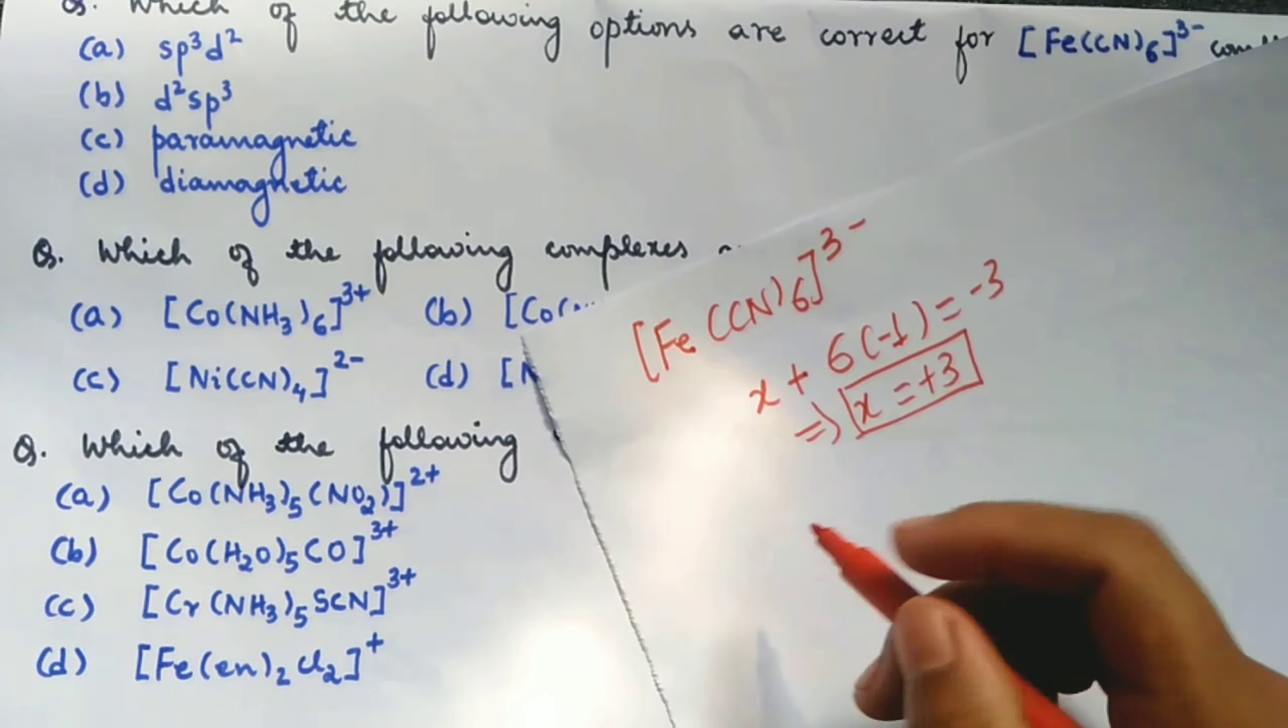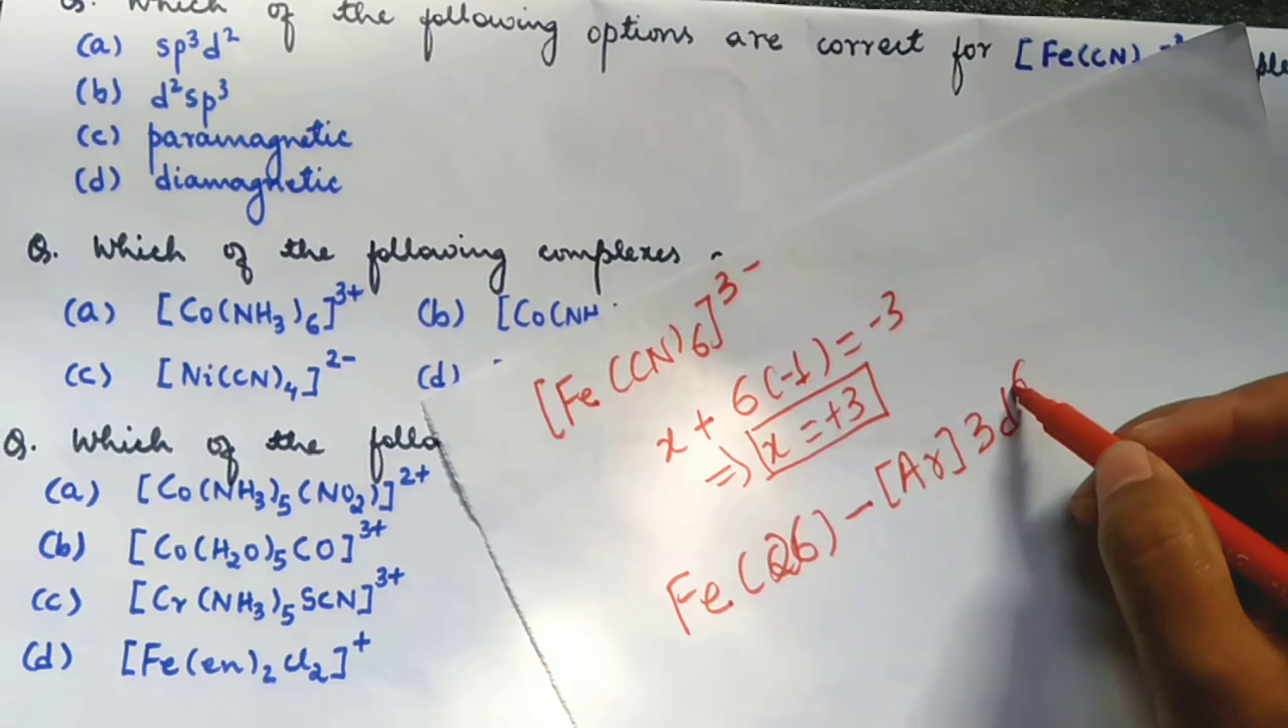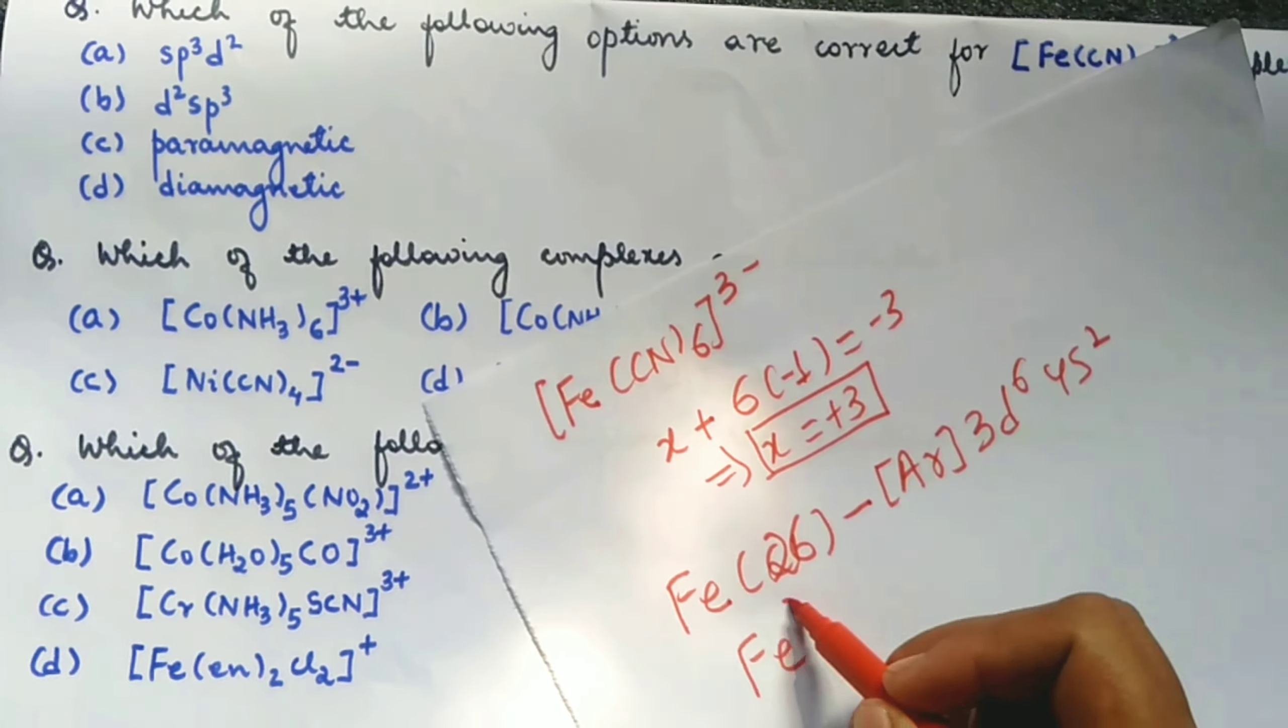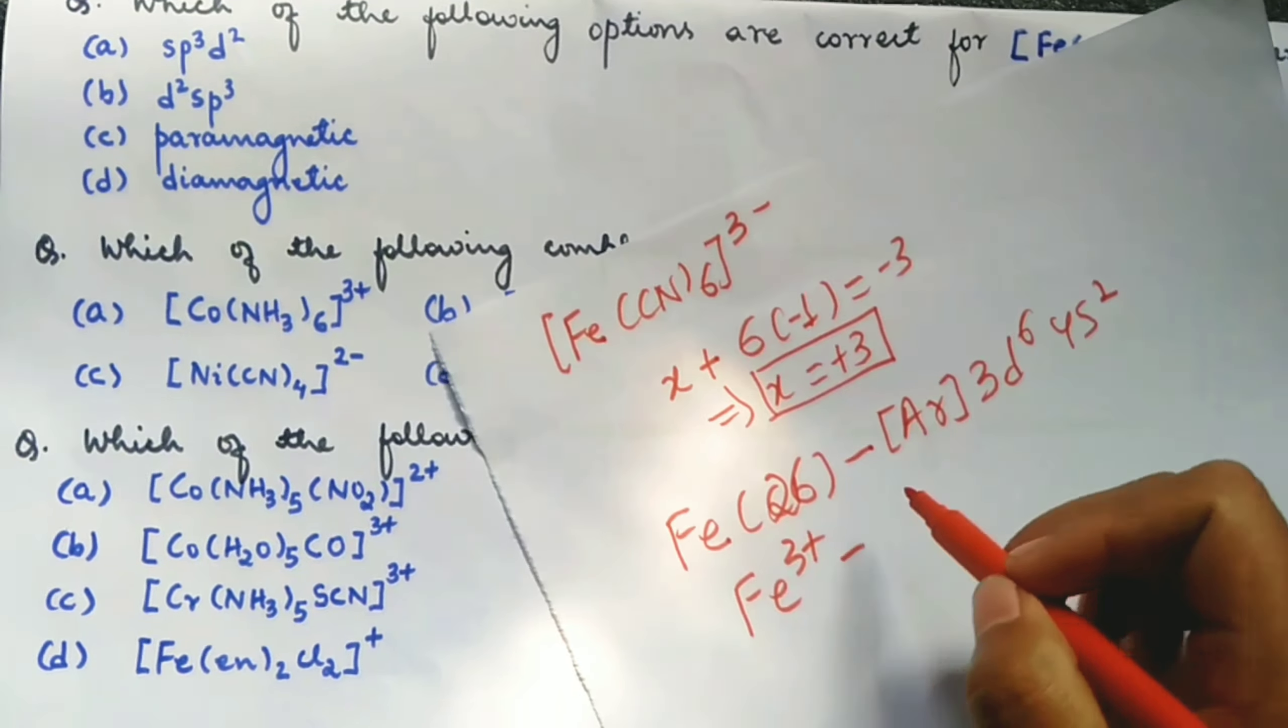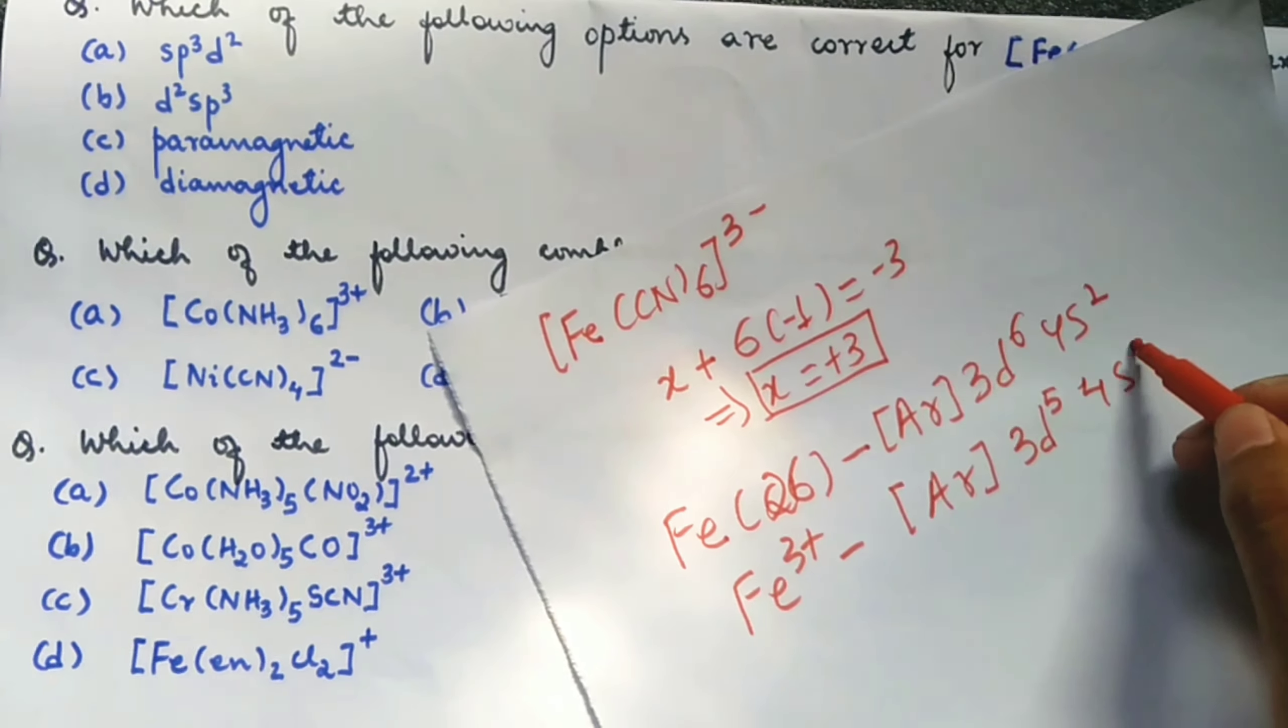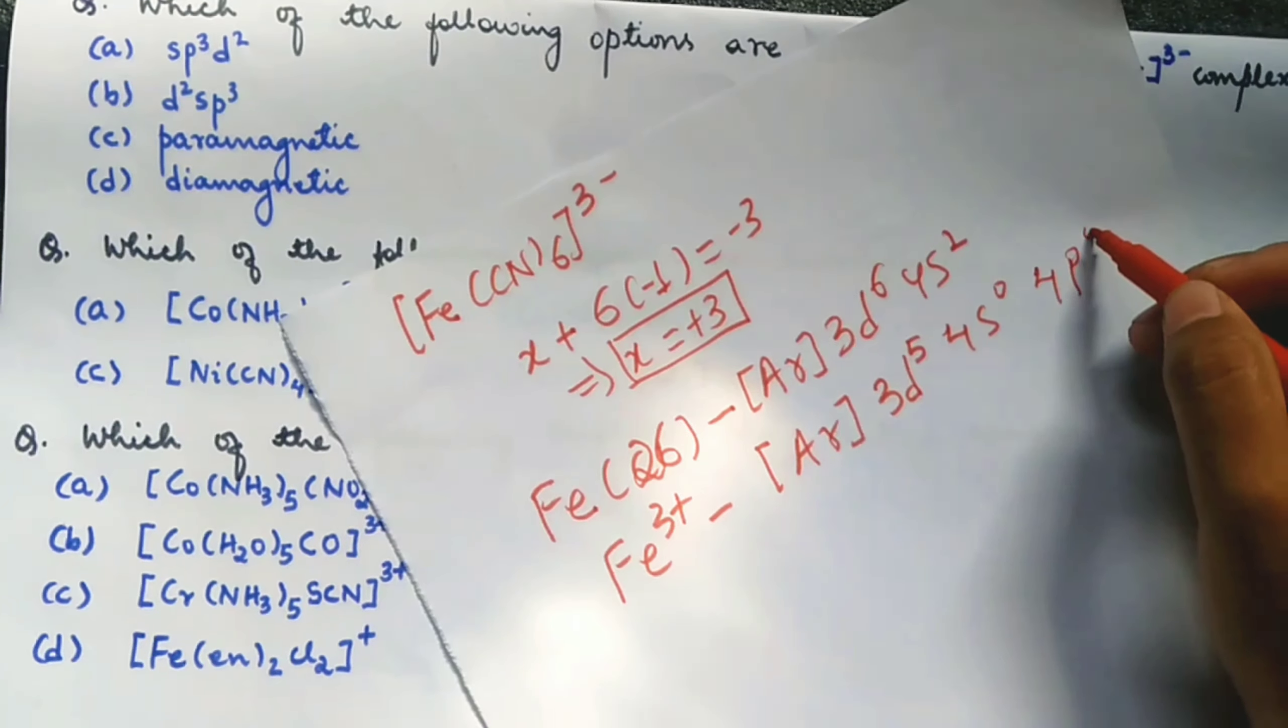Now write the electronic configuration. We have argon, 3d6, 4s2. In the plus 3 oxidation state, 3 electrons are lost. 2 from the 4s and 1 from the 3d, so we have 3d5, 4s0, and then the 4p0.